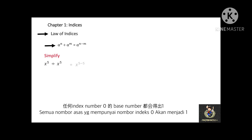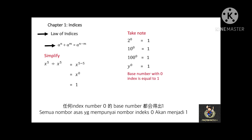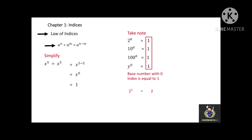Please take note of this example: x to the power of 5 divided by x to the power of 5 gives x to the power of 5 minus 5, which is x to the power of 0. Remember, any base number with index 0 is equal to 1. For example, 2 to the power of 0 equals 1, 10 to the power of 0 equals 1, 100 to the power of 0 equals 1, and y to the power of 0 also equals 1. Also, the index number is negligible when it equals 1 — for example, 2 to the power of 1 can be written simply as 2, and y to the power of 1 can be written simply as y.